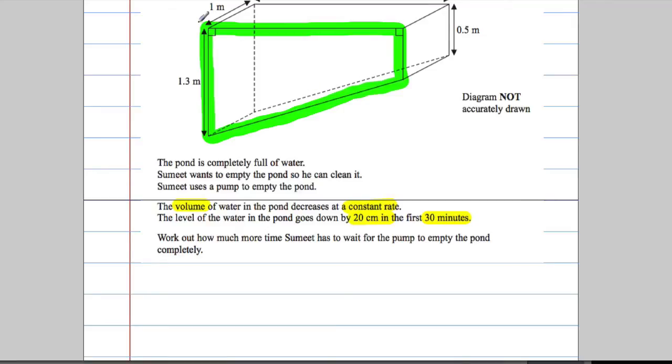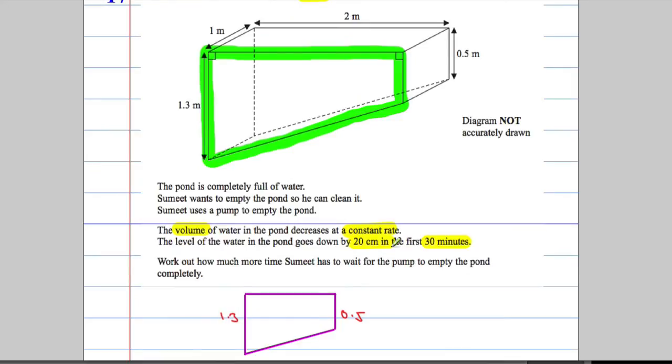I'm going to calculate the area of the trapezium, so I'll do a very quick sketch just here. This side is 1.3 meters, this side is 0.5 meters, and the distance across the top is 2 meters. I'm gonna work everything in centimeters, so 1.3 meters is 130 and 0.5 is gonna be 50.